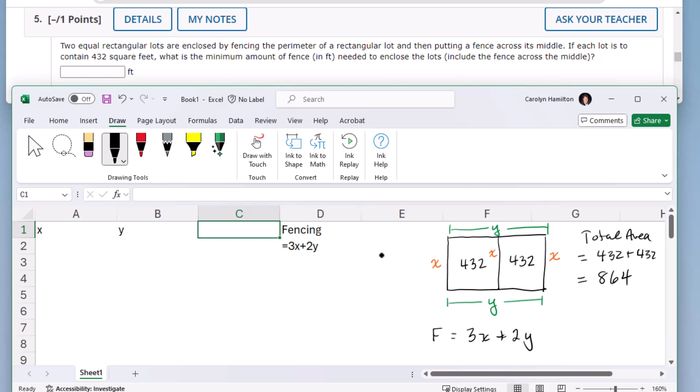and they relate based on this area. So I know that the area has to be 864, and I know that the area is x times y.